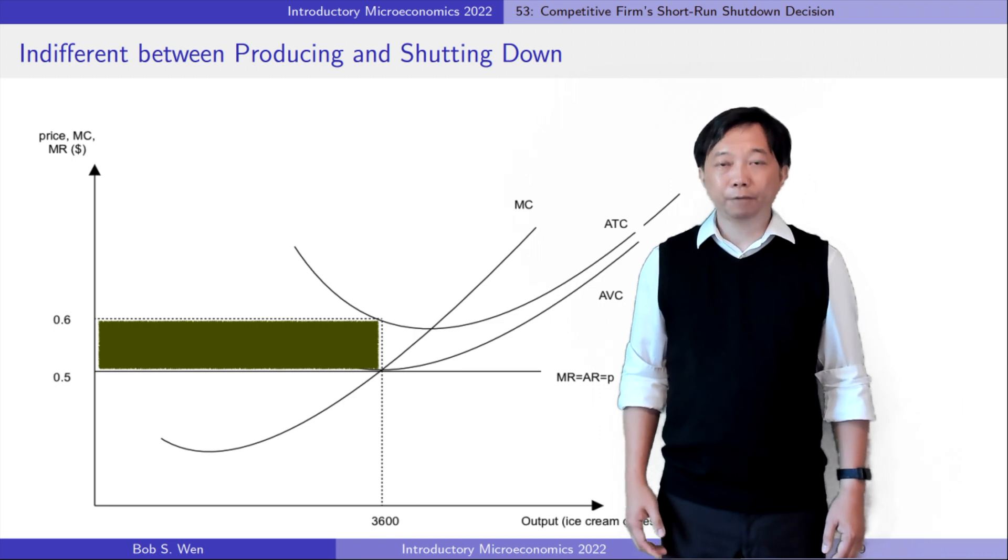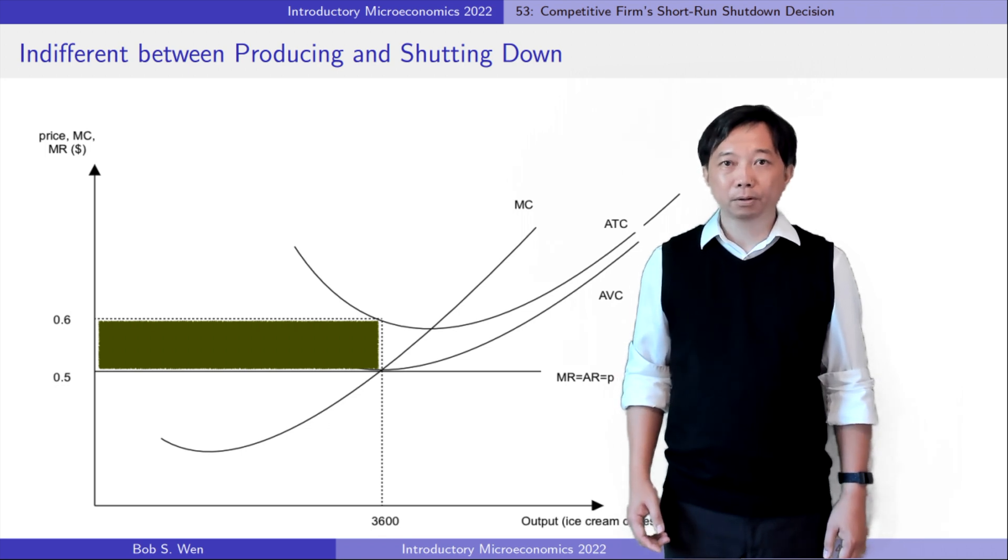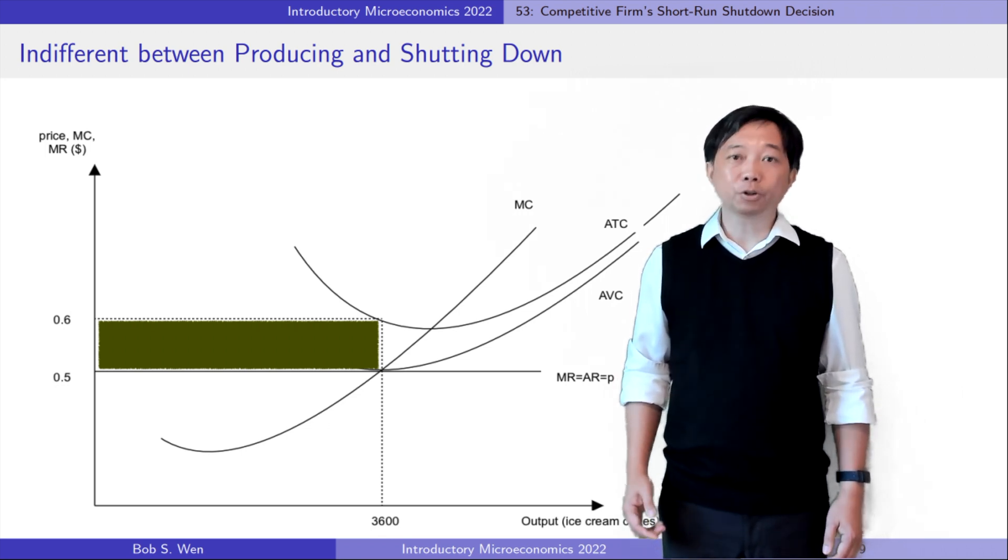On the other hand, if the firm shuts down and does not produce anything, it does not need to pay the variable cost, but it still has to pay the fixed cost, the rent.